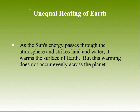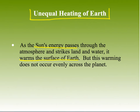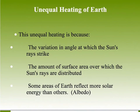The first thing we talked about in class is unequal heating of the Earth. The sun's energy passes through the atmosphere and strikes different surfaces, warming the surface of the Earth. However, this does not occur evenly across the planet. This unequal heating is what drives different weather patterns, air and ocean currents.